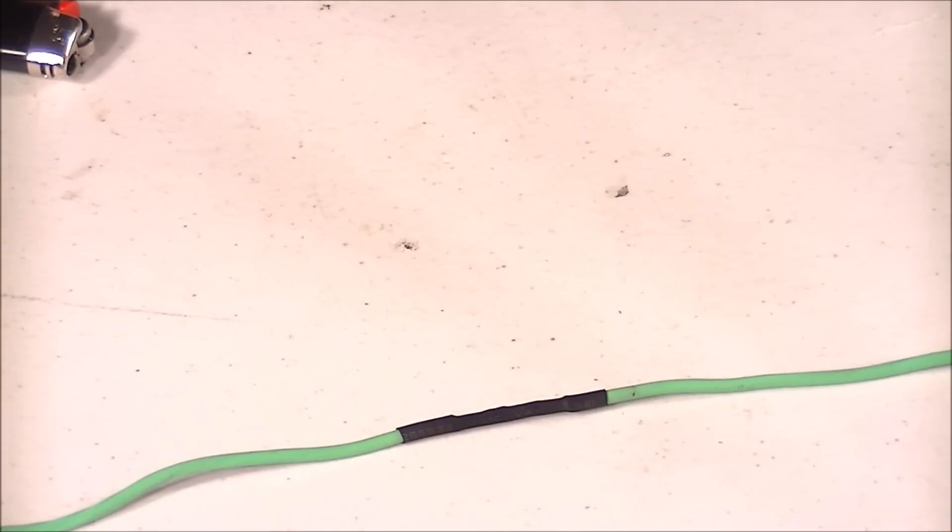Just hover the tip over the tubing and move it around to use the radiant heat to activate the tube. Make sure you don't actually make contact with the tip because the tubing will melt very easily. Just heat up the tubing enough to melt it and form fit the wire, but this process can be very time consuming.